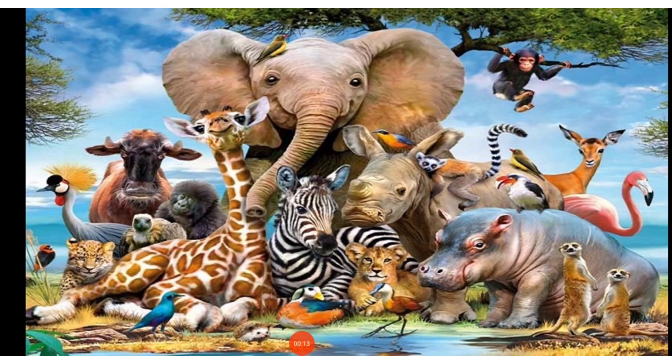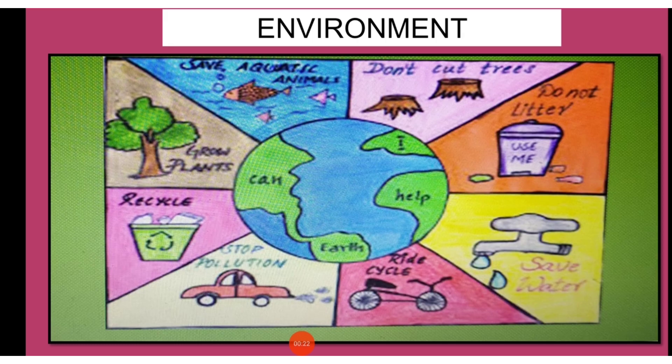Different regions in the world have various types of living creatures called organisms. Students, to remain alive, organisms derive food and other materials from their surroundings. The immediate surroundings of an organism form its environment. It includes physical surroundings, water, air, soil and climate.